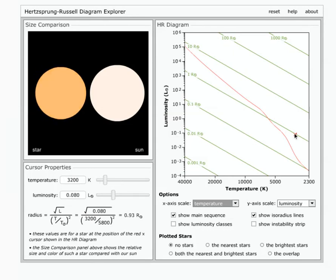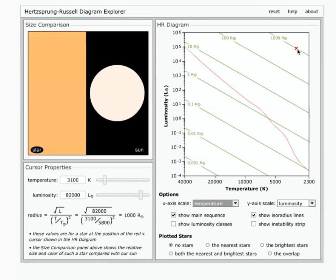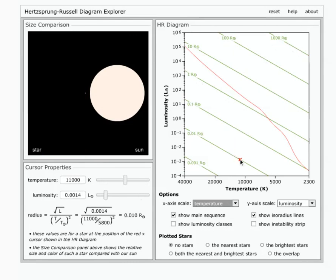This is a line on the HR diagram where a star will be approximately the same size the whole time. So in this case, this line represents all the stars that would be about the same size as the sun. And up here are like the things that are a thousand times bigger than the sun. Down here are a hundred times smaller than the sun. So those are the isoradial lines.